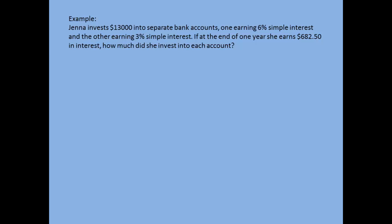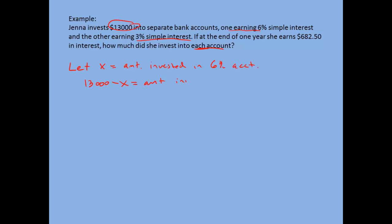When solving a word problem, the first thing to think about is how many things am I looking for. In this case, since they asked how much did she invest into each account, we're looking for two things because there are two accounts — a 6% and a 3% simple interest account. So we're going to have two let statements. Let X equal the amount invested into the 6% account. If I invested X into the 6% account and had $13,000 total, then the amount left over for the 3% account would be 13,000 minus X.